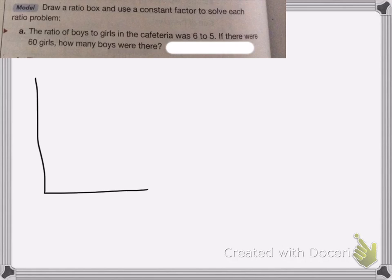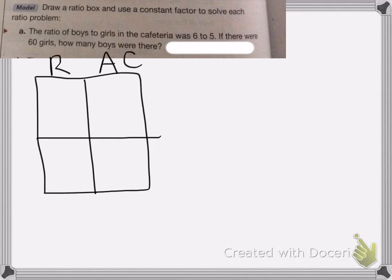So first, draw your box. Again, we have ratio, actual count. So ratio is of boys to girls. So it's 6 to 5. And I have 60 girls.